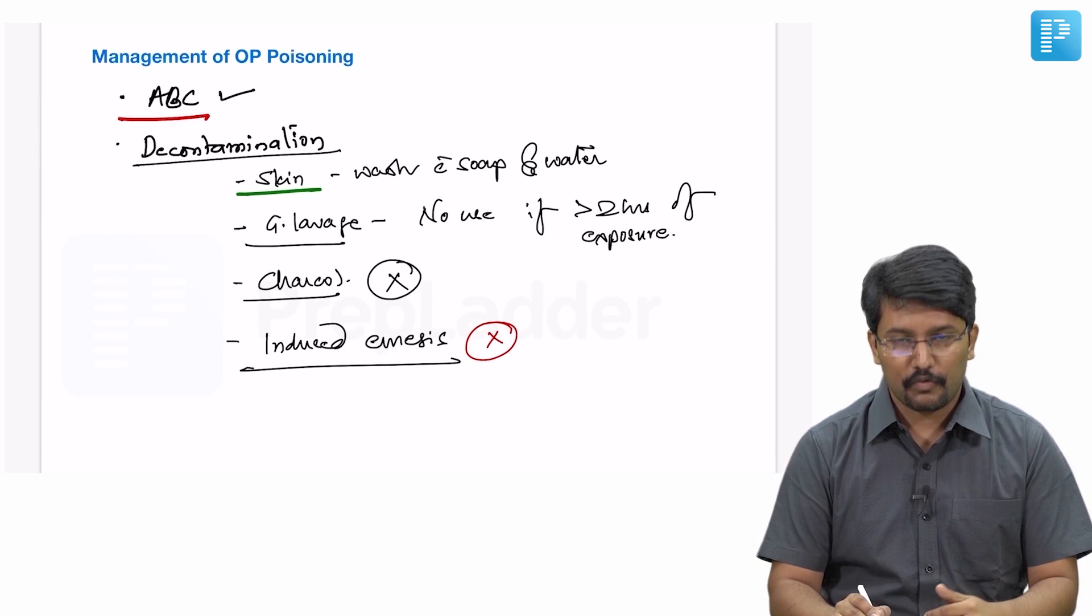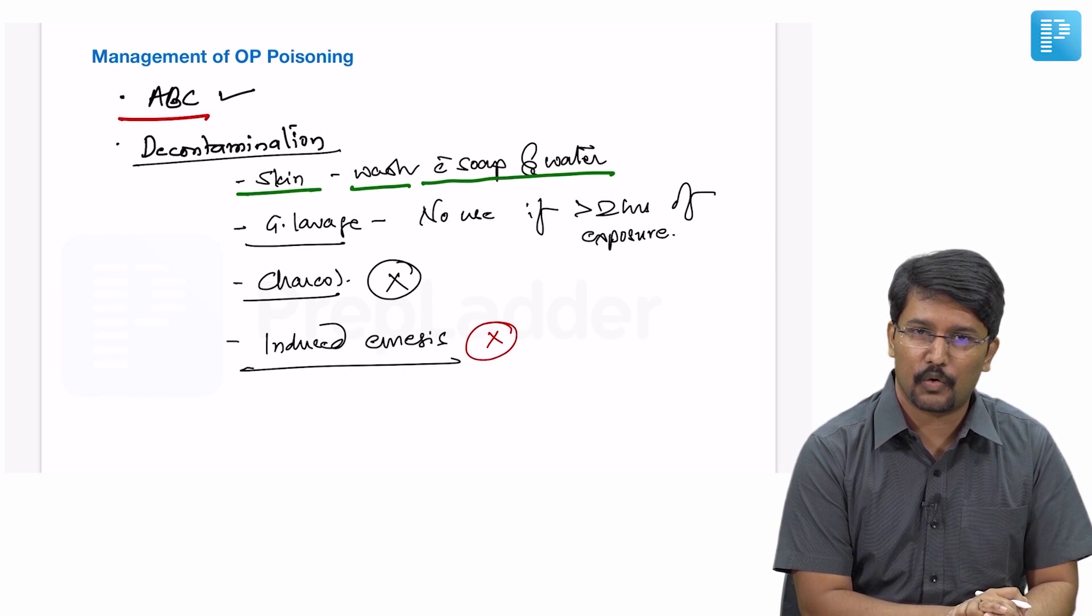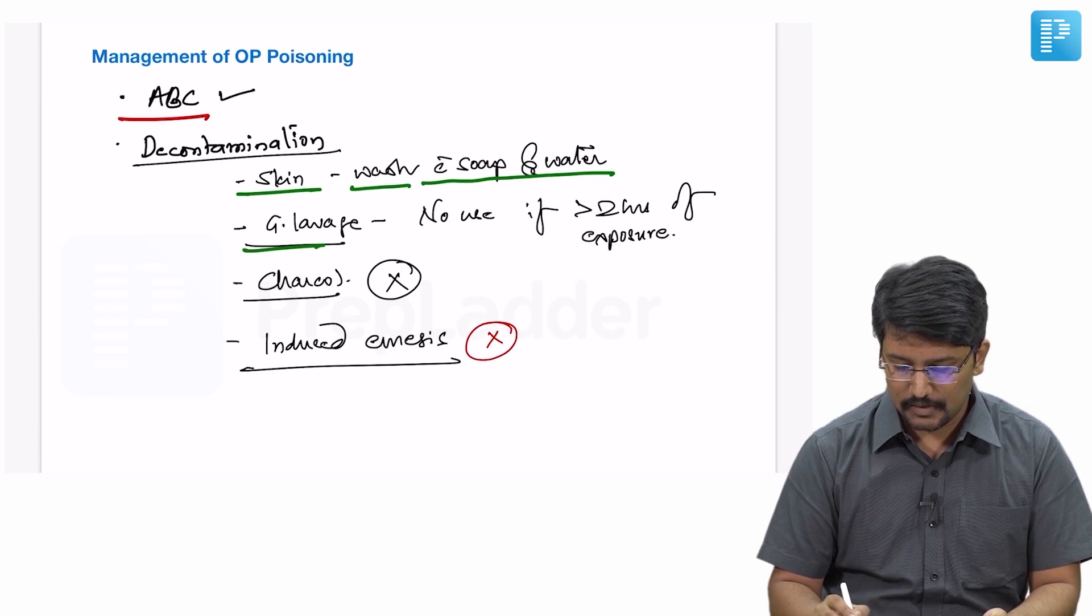When it comes to decontamination, since organophosphate compounds can be absorbed through the transcutaneous route, if there is exposure to skin, we should wash the skin with soap and water. We should remove all the clothes which may be soiled with organophosphate compounds, then wash the skin with soap and water.